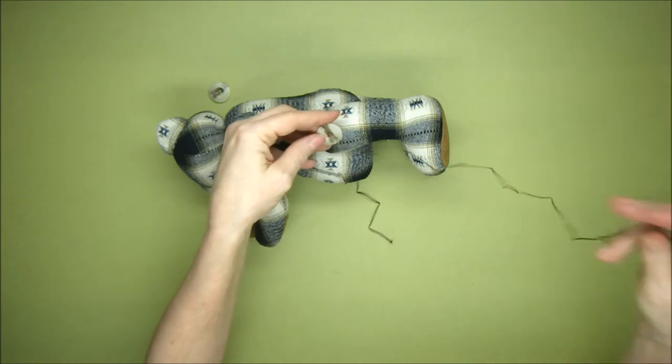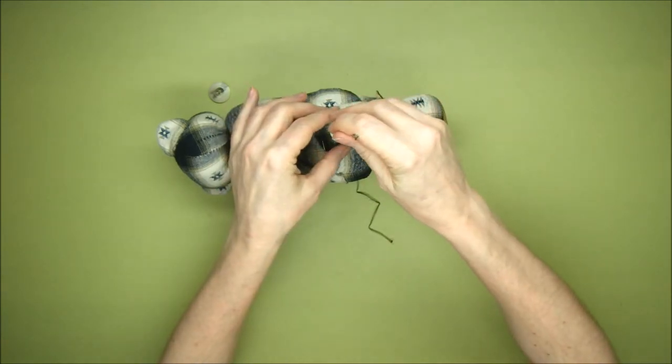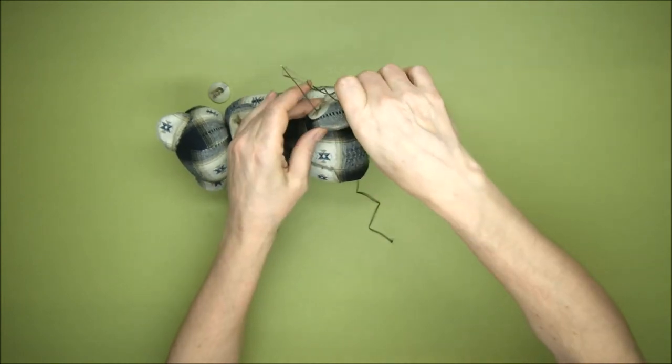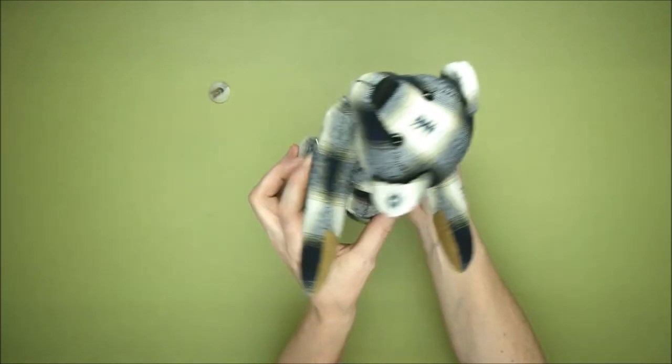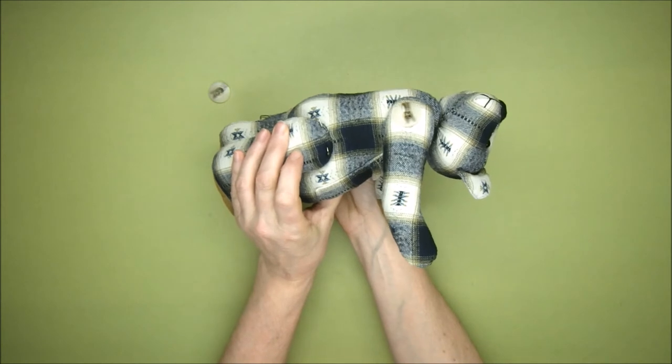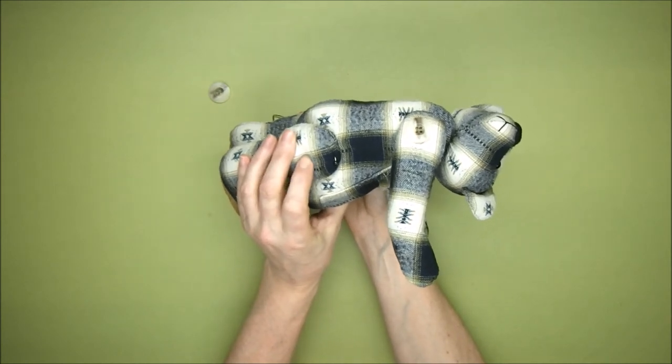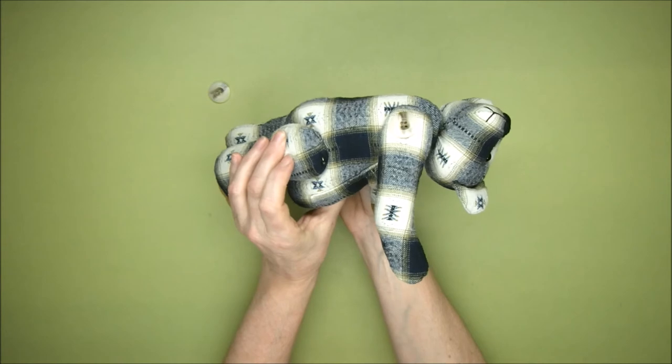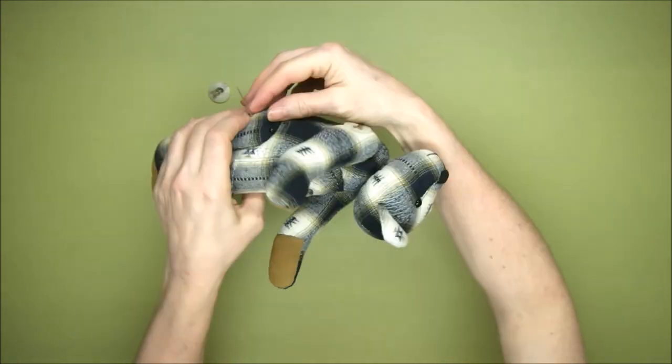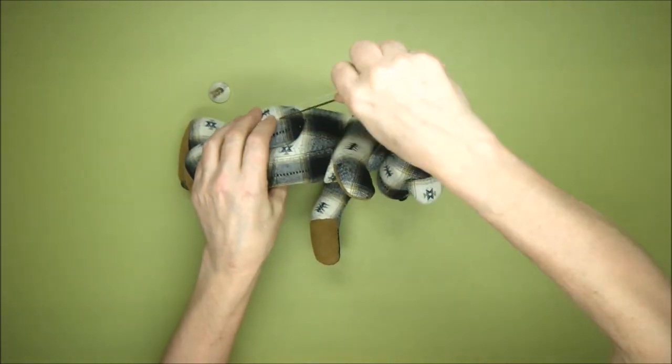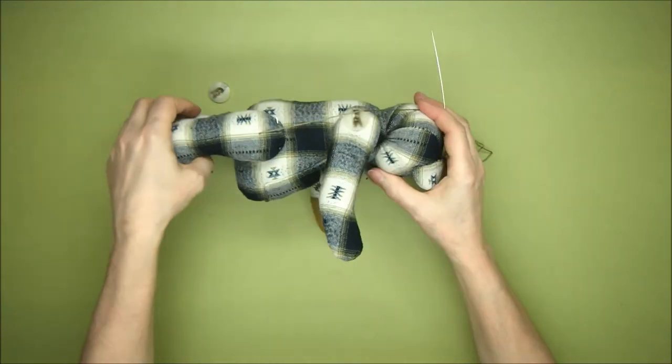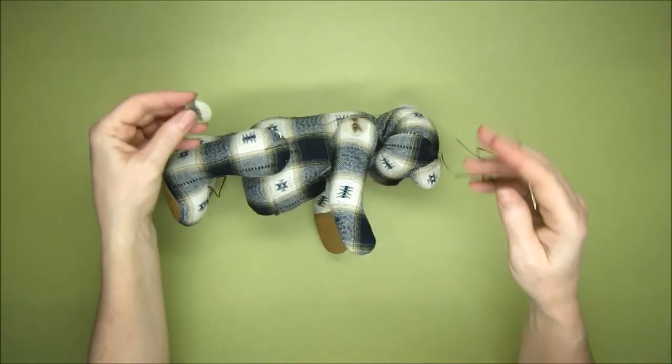Keep our needle going in close to where our thread's already gone through, all the way through. Come out at the same position on the leg. Use your pattern if you have pattern to work out where that is. Once you've pulled that through, pop your other button on.